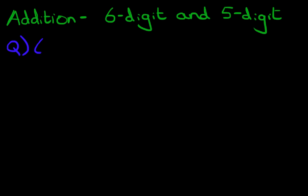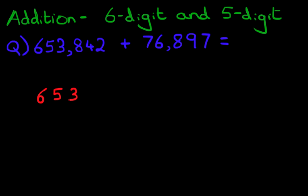What is 653,842 plus 76,897? It looks quite tricky, doesn't it? Well, the first stage is we're going to rewrite this question in the vertical format. Let's do that. 653,842 plus, make sure you get this right, 76,897.